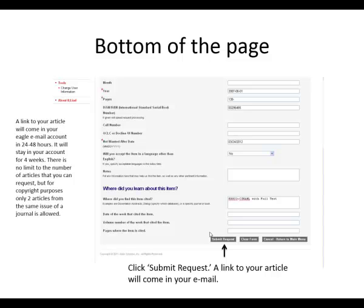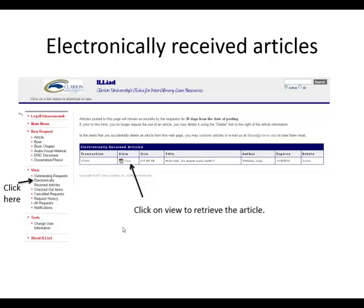The turnaround time is about 24 to 48 hours. You will receive notice in your Eagle email account that your article is there, with a hot link to take you into ILLiad. You'll log in and find electronically received articles listed there. Click the View button and it will open up for you. You can save it, print it, or do anything you want with it. It stays in the account for four weeks and then is purged. There is no limit to the number of articles you can request, except you can only request two articles out of one issue of a journal due to copyright.